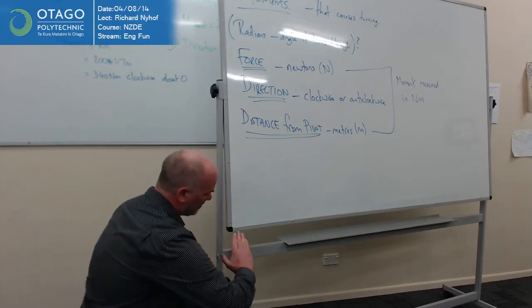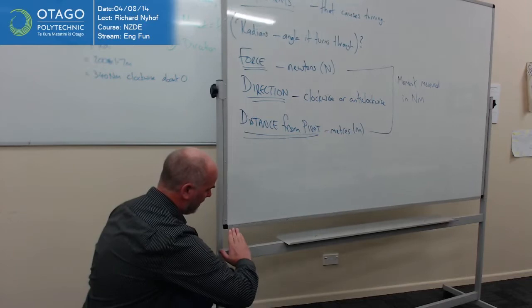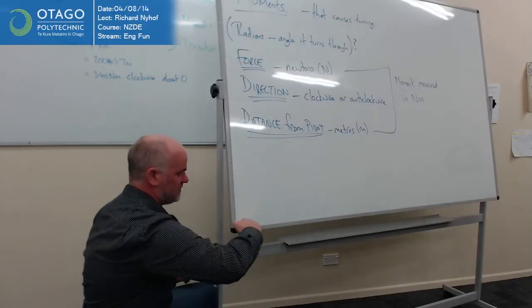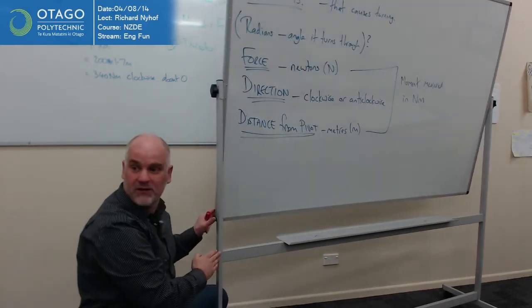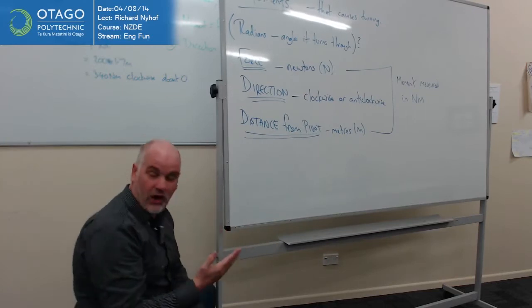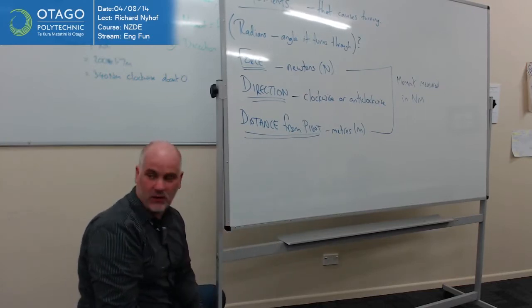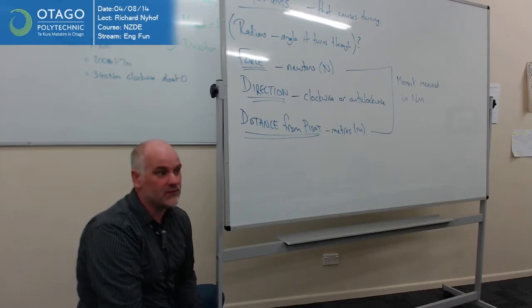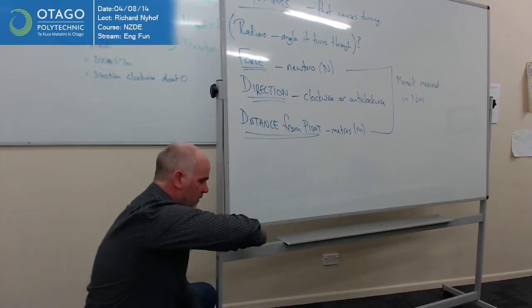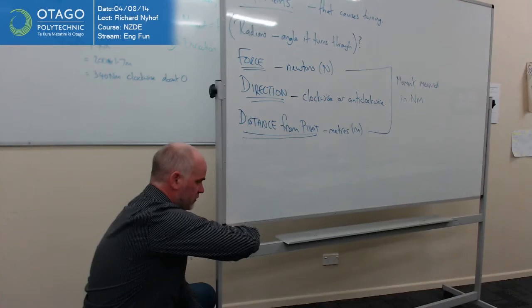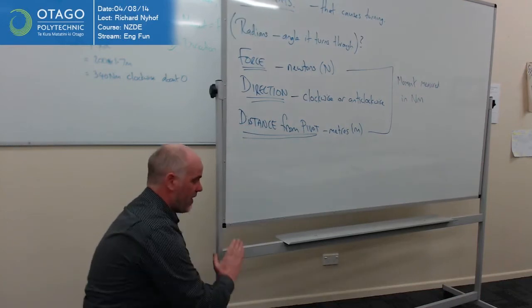And if I push at a bit of an angle, it'll turn a bit, but nowhere near as much as if I push there. So not just the size of the force and the point of application, there's something else going on as well. The angle of push. So we'd assumed that I was going to push at right angles to the motion, rather than at some weird angle.